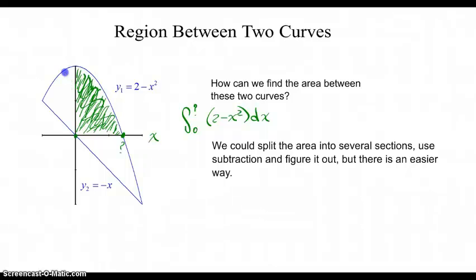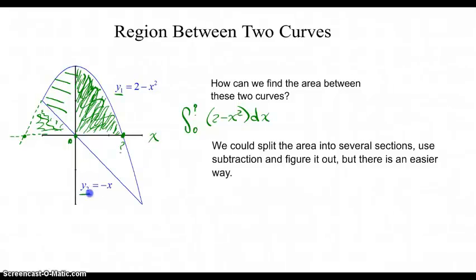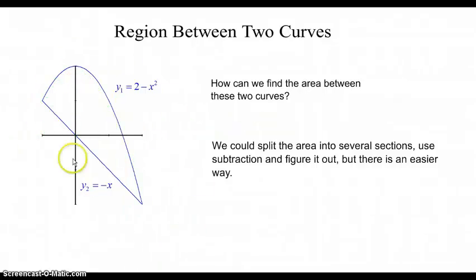Here's the problem with this area. This parabola doesn't go all the way down to the horizontal axis. So if we started from this value and stopped at x equals zero, we'd have more area than we need. This region has an upper bounding curve that is y1, but it has a lower bounding curve that is y2. And over here, this region has an upper bounding curve of y1 and a lower bounding curve of y2 as well.